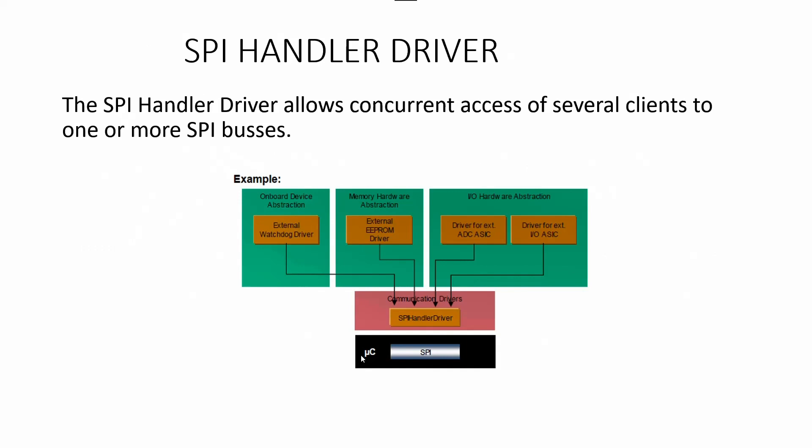The SPI Handler driver is part of the communication driver and is mainly used to allow concurrent access of several clients to one or more SPI buses. For example, on-board device abstraction (like an external watchdog driver) coming from the abstraction layer, and memory hardware abstraction (like an external EEPROM driver) can both use the SPI Handler driver, which is then associated with the Microcontroller SPI.